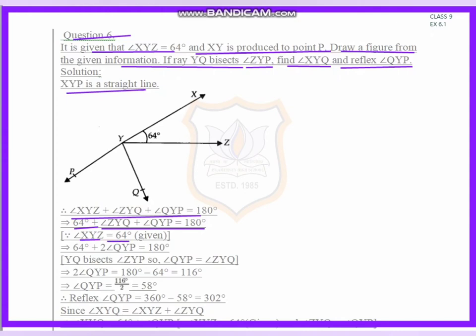We know that angle ZYQ and angle QYP are the same, so I can write 2 times angle QYP plus 64 equals 180.